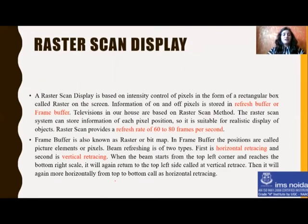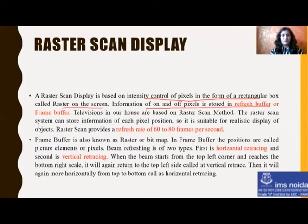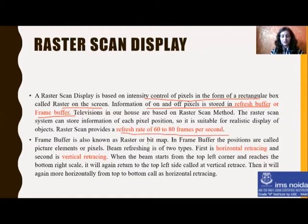Based on the CRT, there come two technologies: raster scan displays and random scan displays. These are also based on CRTs and also produce black and white displays. Now let's start raster scan displays. What is raster scan display? Raster display is based on the intensity control of pixels in the form of a rectangular grid called the raster on the screen — meaning information is on or off in the refresh buffer. The raster scan system can store the pixels or information of each pixel, and the raster system has a refresh rate of 60 to 80 frames per second.